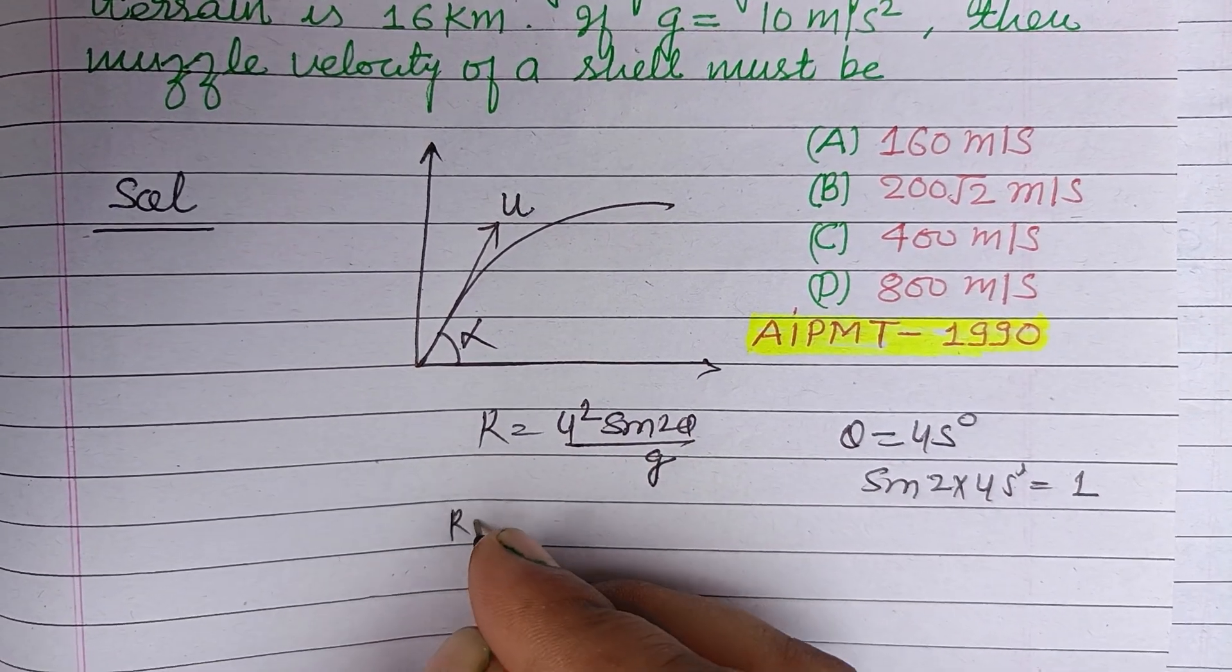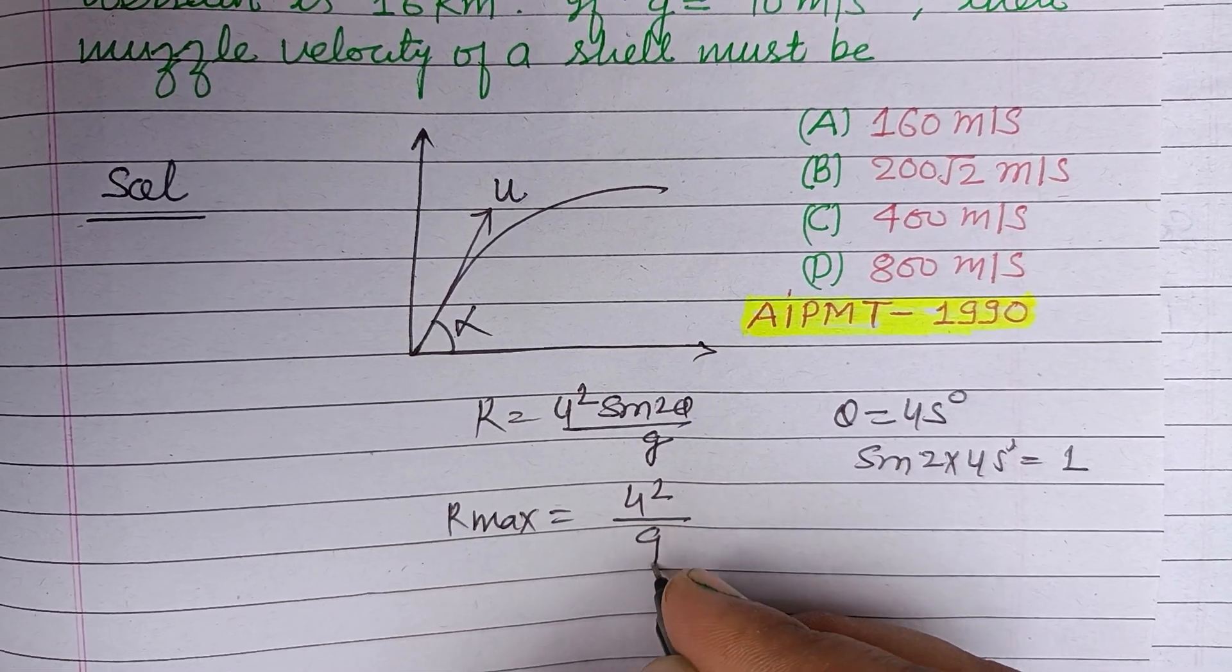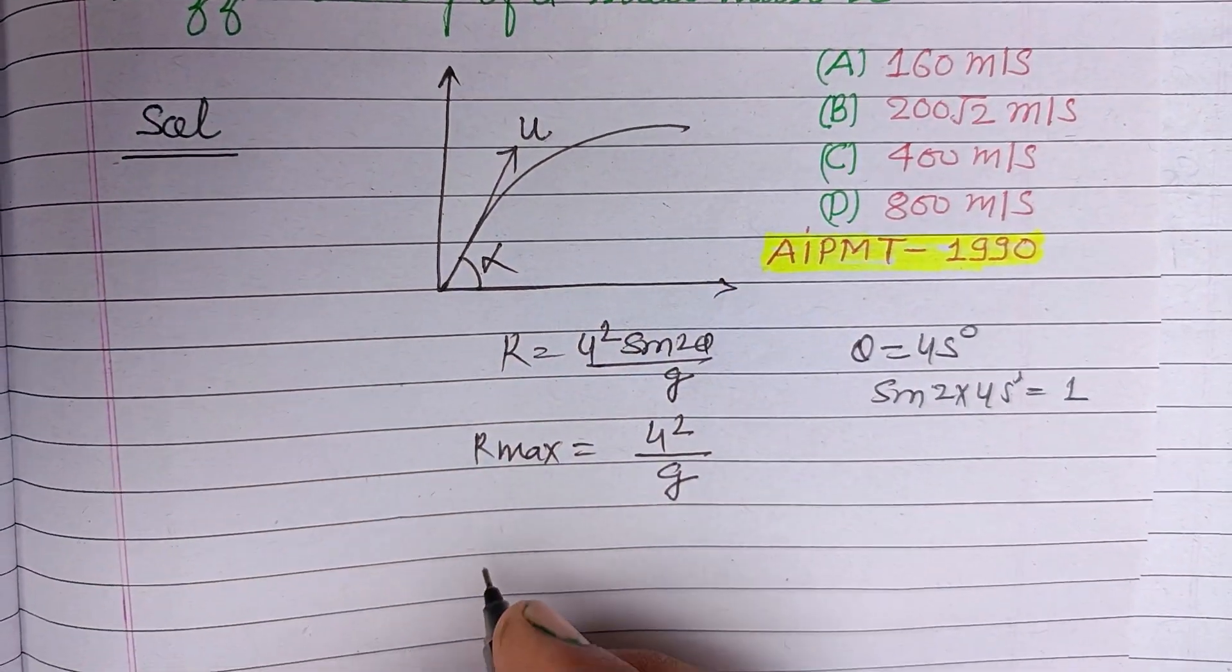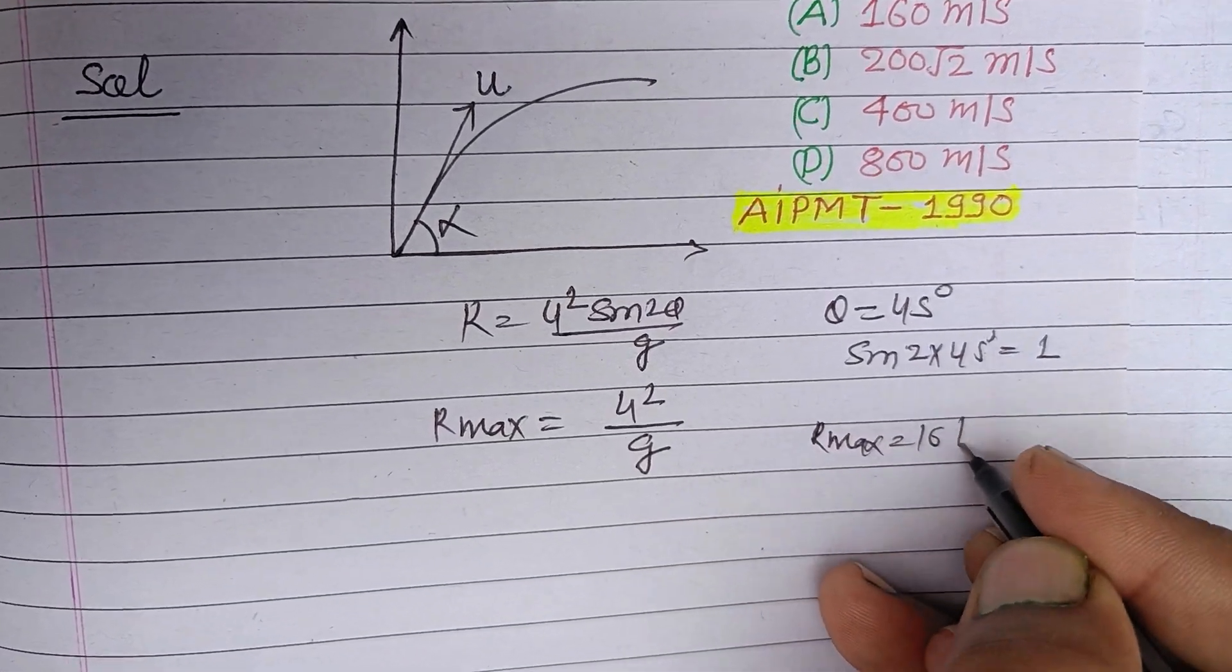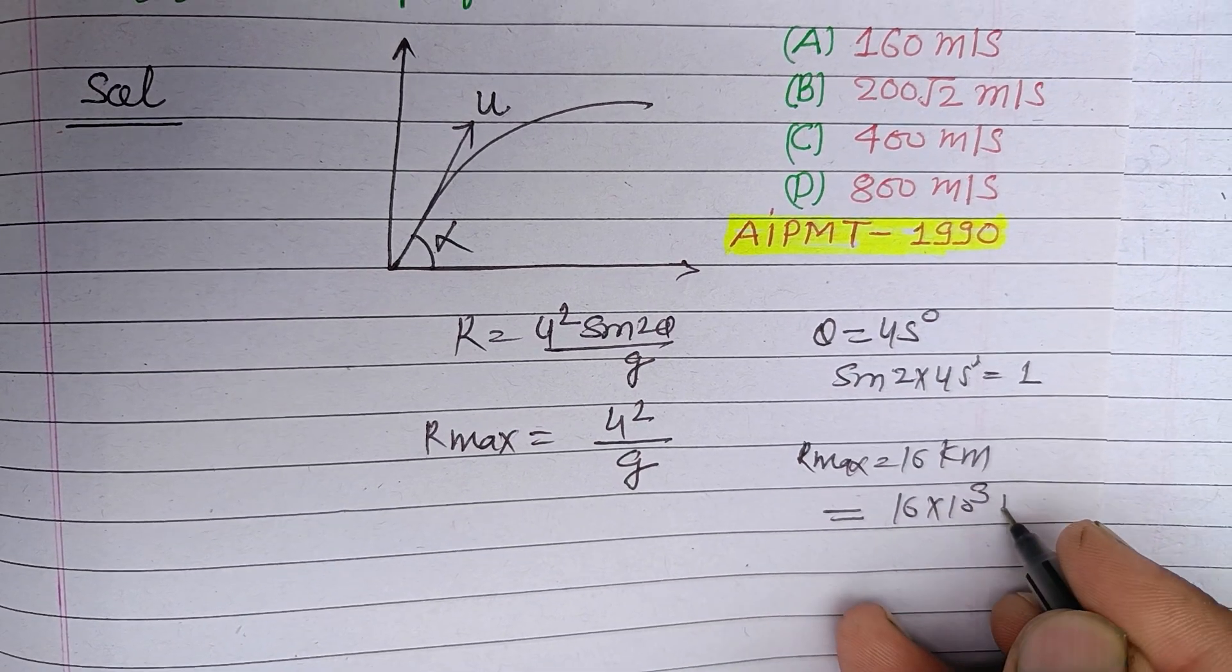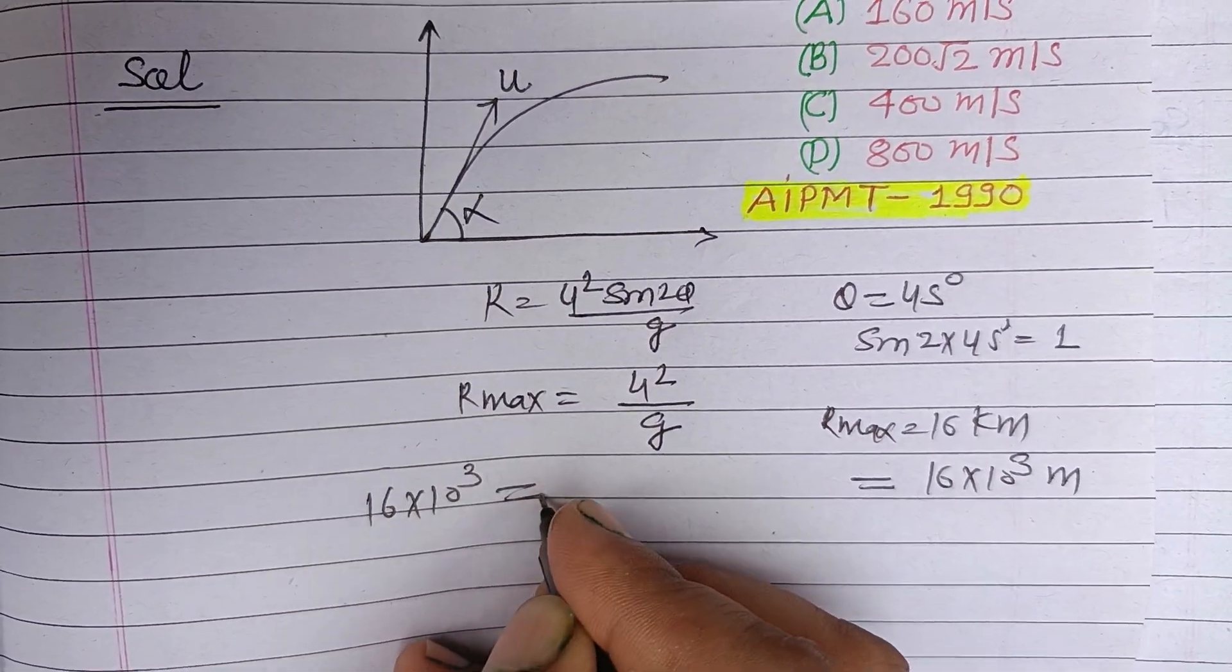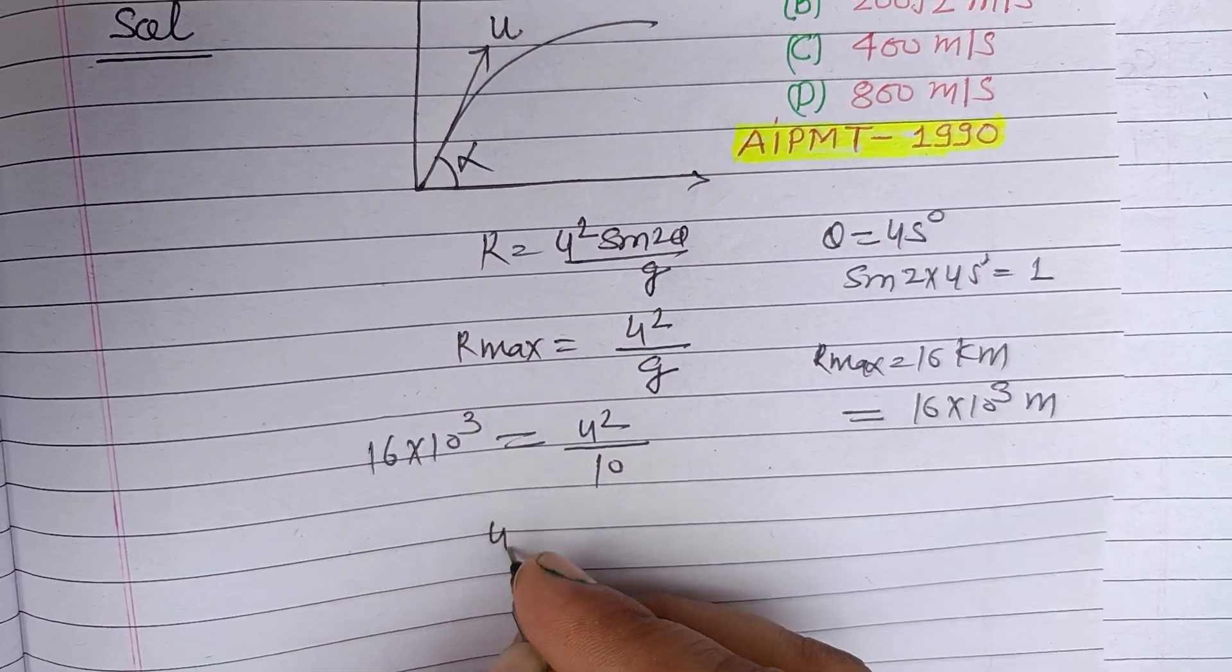Then R maximum equals u squared upon g. And it is given to us as 16 kilometers, or 16 times 10 to the power 3 meters. So this is 16 times 10 to the power 3 equals u squared upon g, and g is given to us as 10.